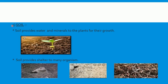The next abiotic component is soil. Soil is also a very important abiotic component which affects all the biotic components of the environment. It provides water and minerals to plants for their growth — plants take water from the soil through their roots. Soil also provides shelter to many organisms such as rats, ants, and earthworms, which all live in the soil. In this way, soil affects the lives of plants and animals.